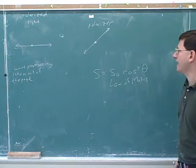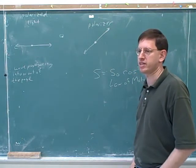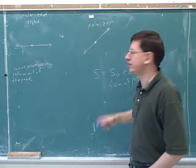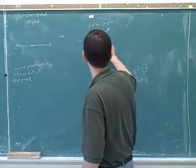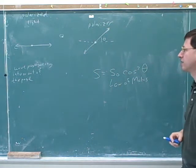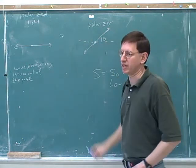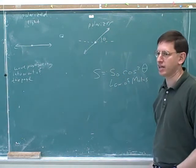So theta is the angle between the polarizer direction and the direction of the polarized light. Theta is the angle between the polarizer direction and the light. So here the light is going horizontally. So I could label this as theta, because this is the direction the light would be moving in. All right. And then this tells you how much of the intensity gets through.